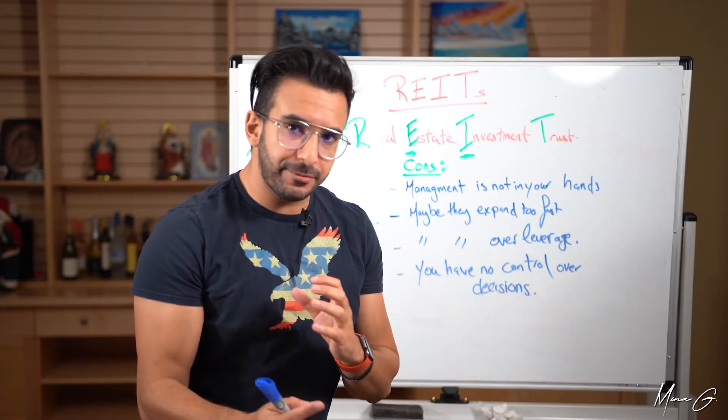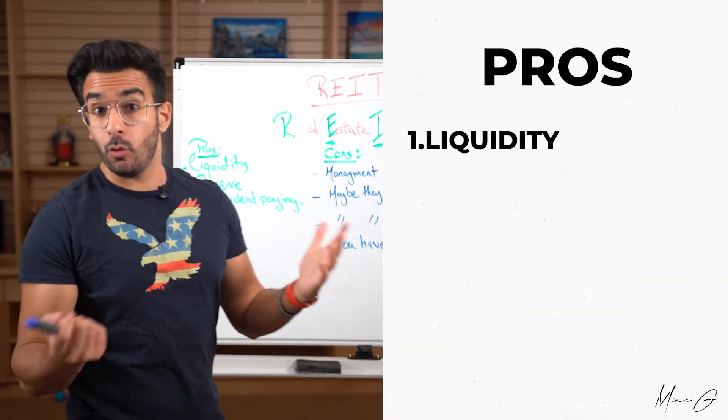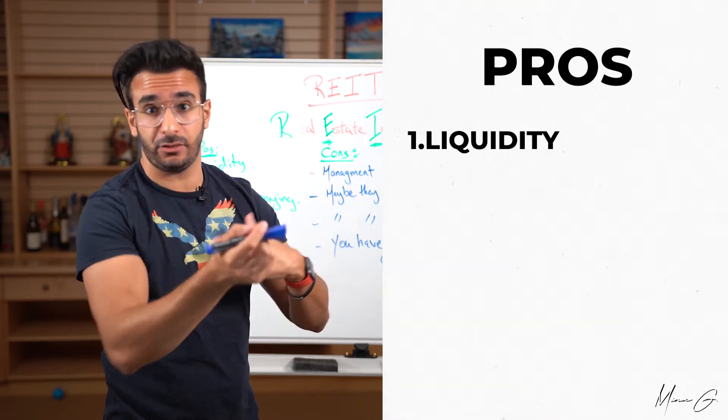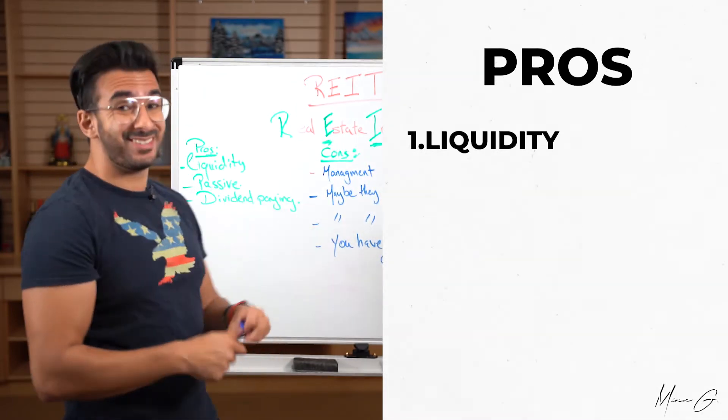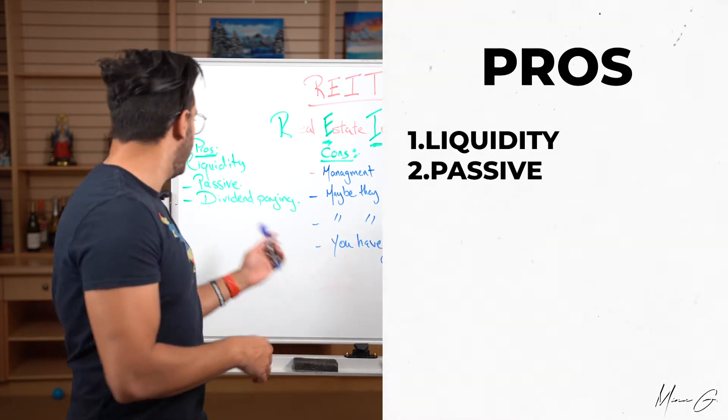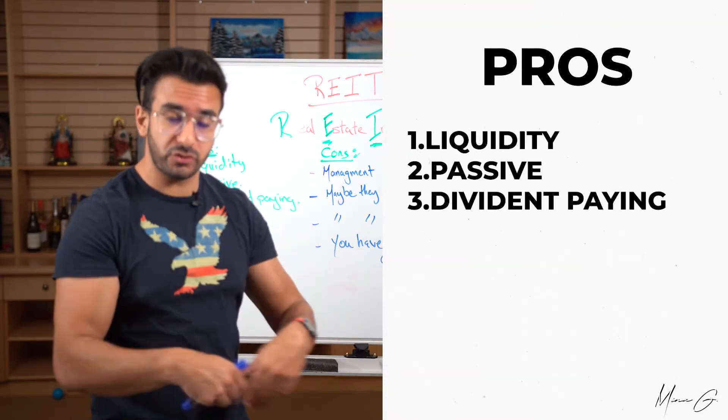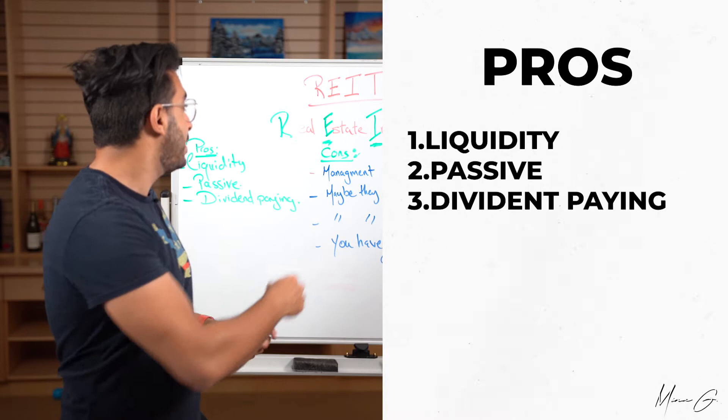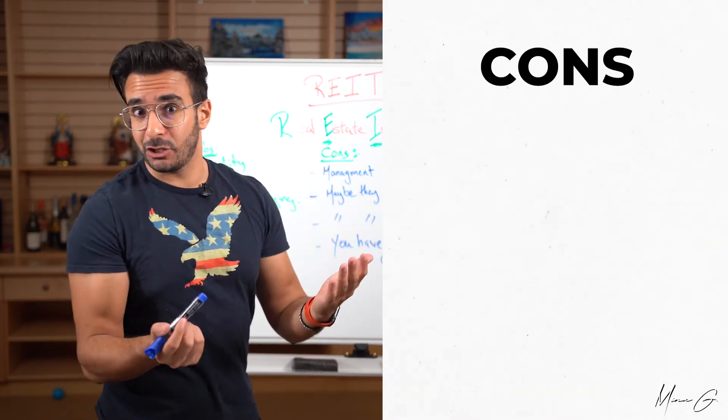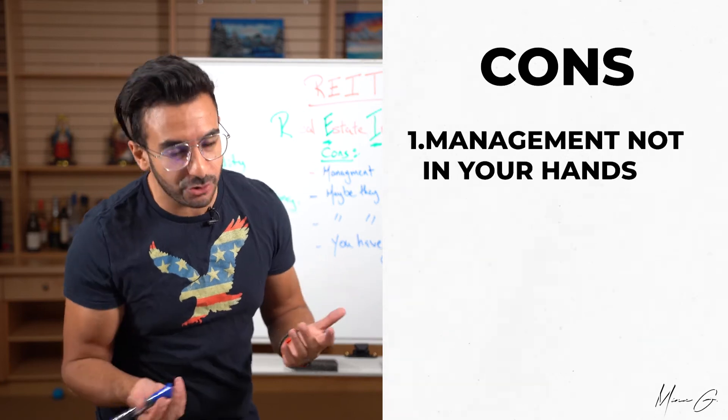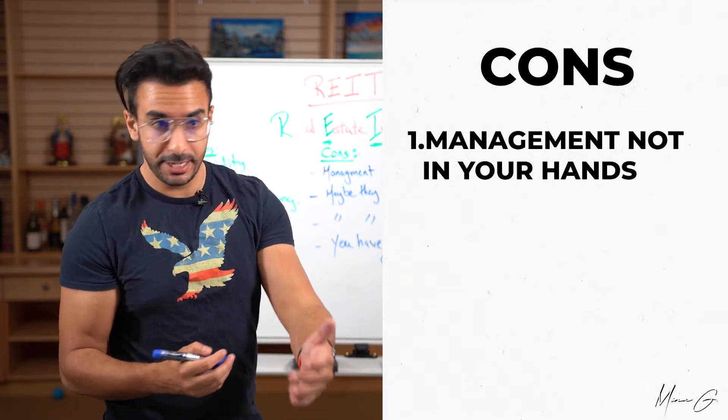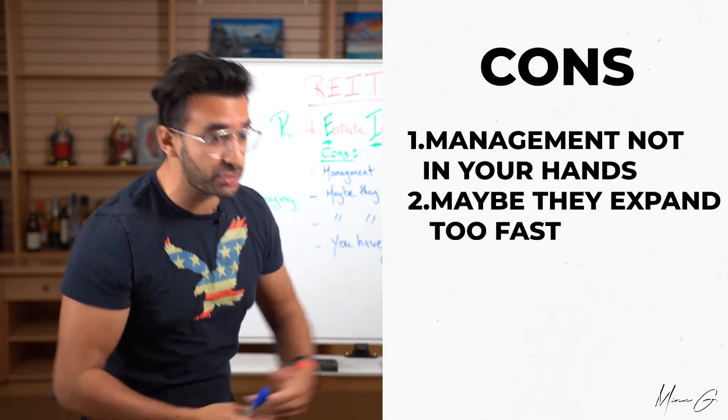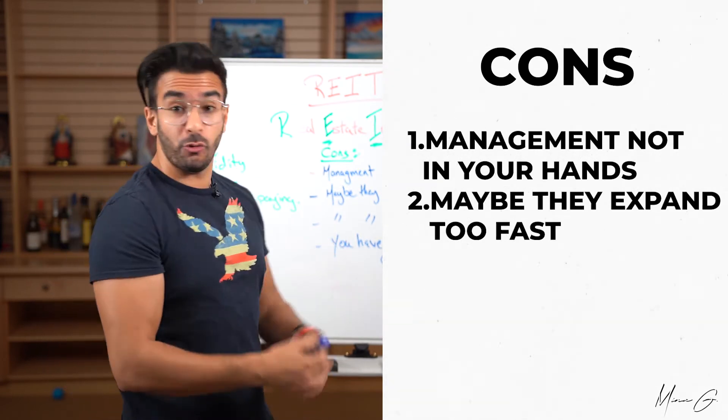So now let's take a little bit of a look about pros and cons. Pros would be liquidity. So as opposed to physical real estate, this one generally, they're tradable, so you could sell them like a stock in and out of the market during market hours. Number two is they're pretty much passive. You don't have to do anything. Number three is they're dividend paying. So they pay out supposedly regular dividends annually, and some REITs would increase the dividend, things of that nature. The cons, however, is pretty much the same thing, but on reverse. So management is not in your hands. So do you trust those managers? Do you know what they're doing? Are they doing a good job? Are they not? You don't really know. Maybe they expand too fast, right?